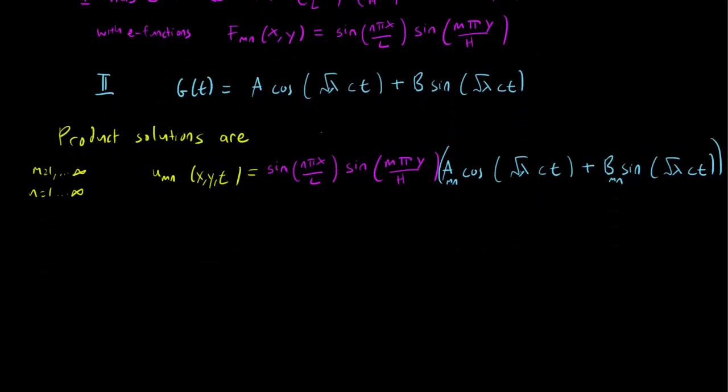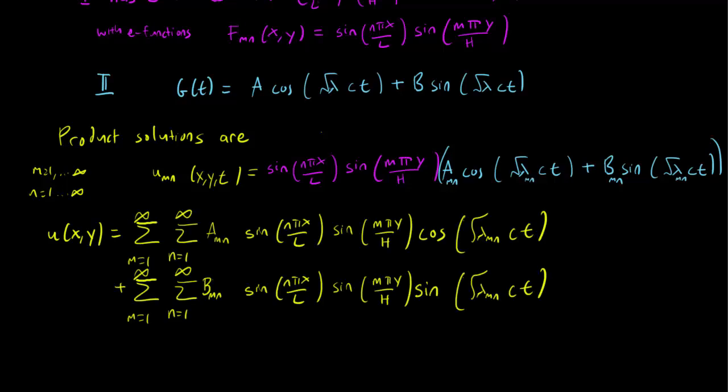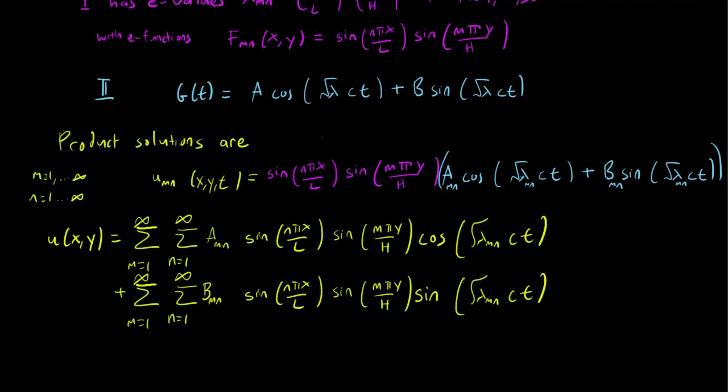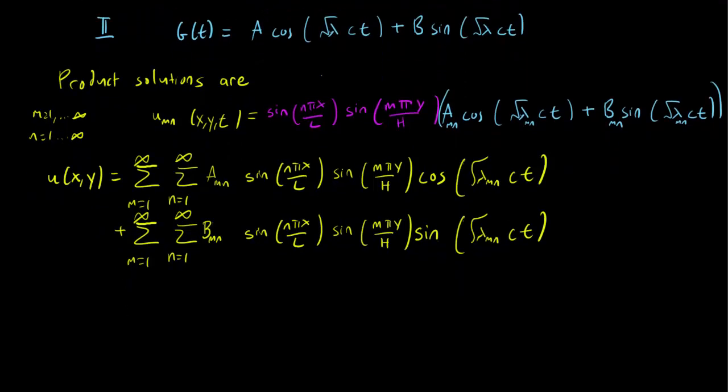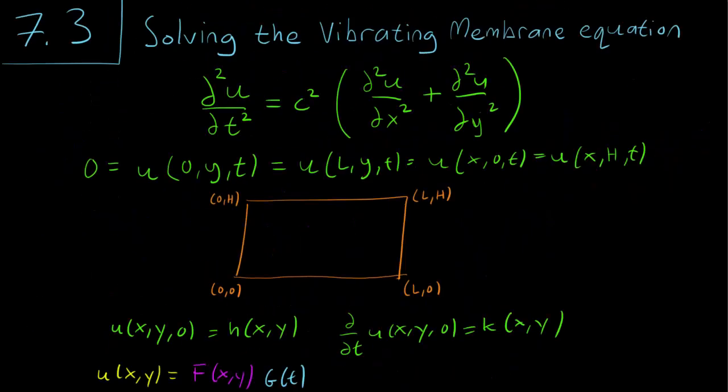Solutions of the vibrating membrane equation can be written as a sum of these product solutions. We have this really nasty double sum, because we are summing through both m and n. Just like in the vibrating string case and all the one-dimensional PDEs that we had solved in the past, we are going to want to be able to calculate a_mn and b_mn. We have the initial conditions h(x,y) and k(x,y), so let's try to use those.